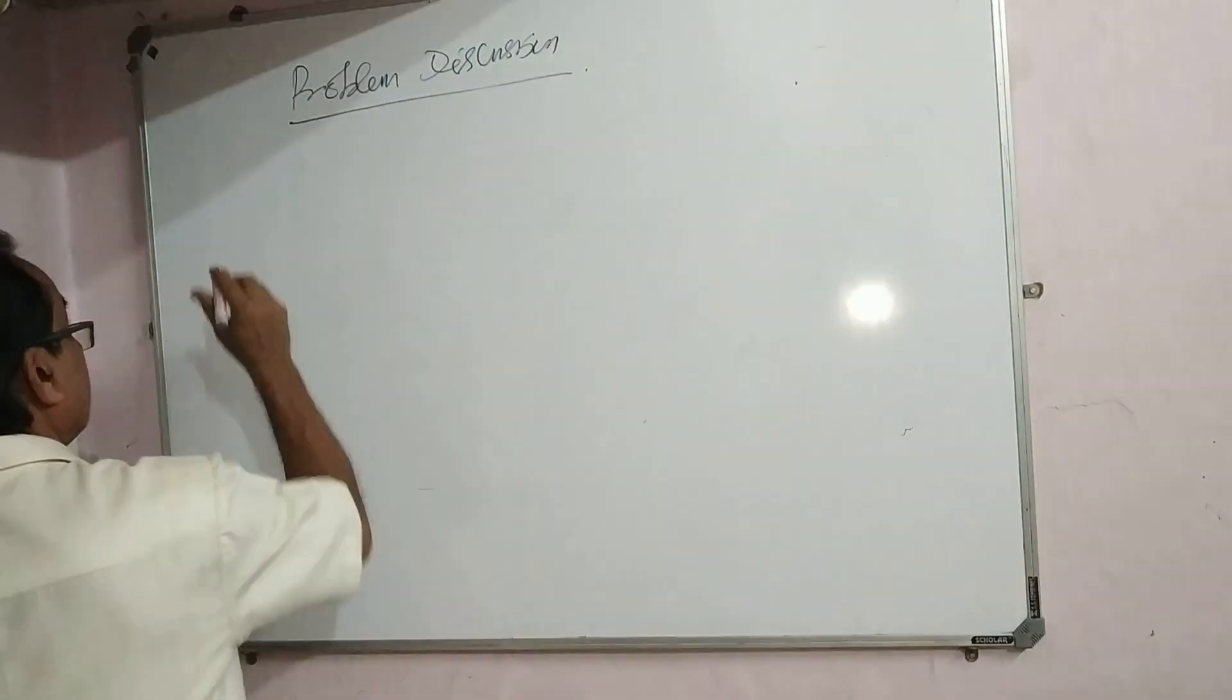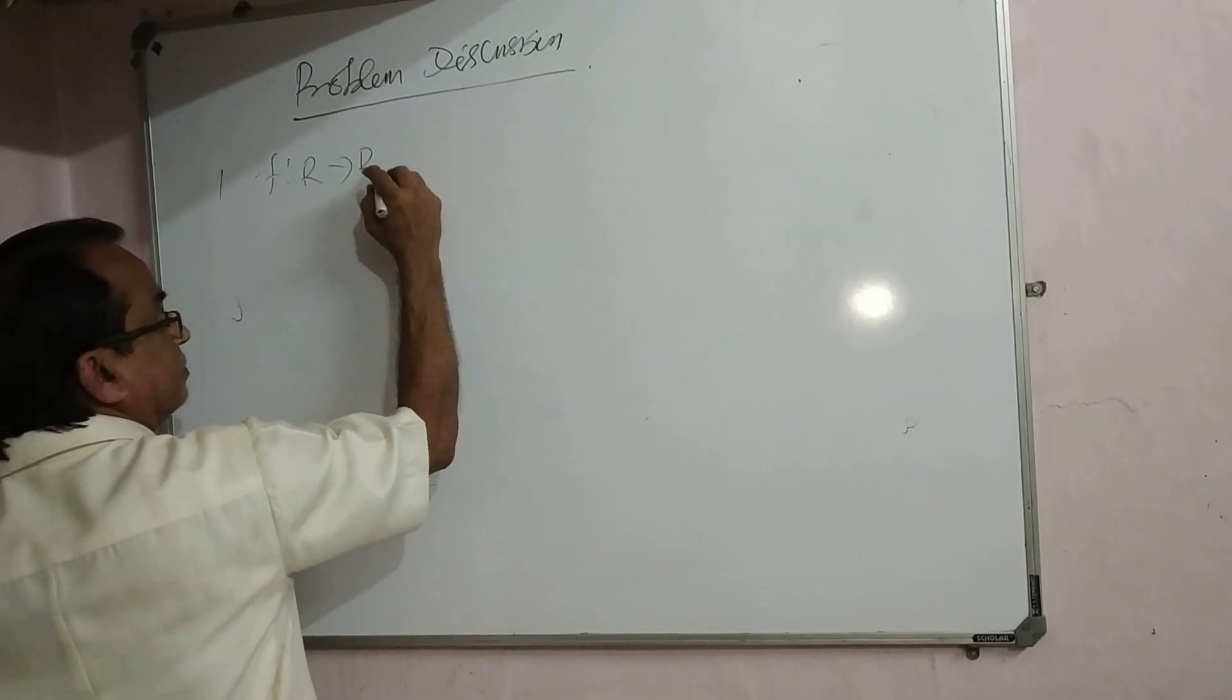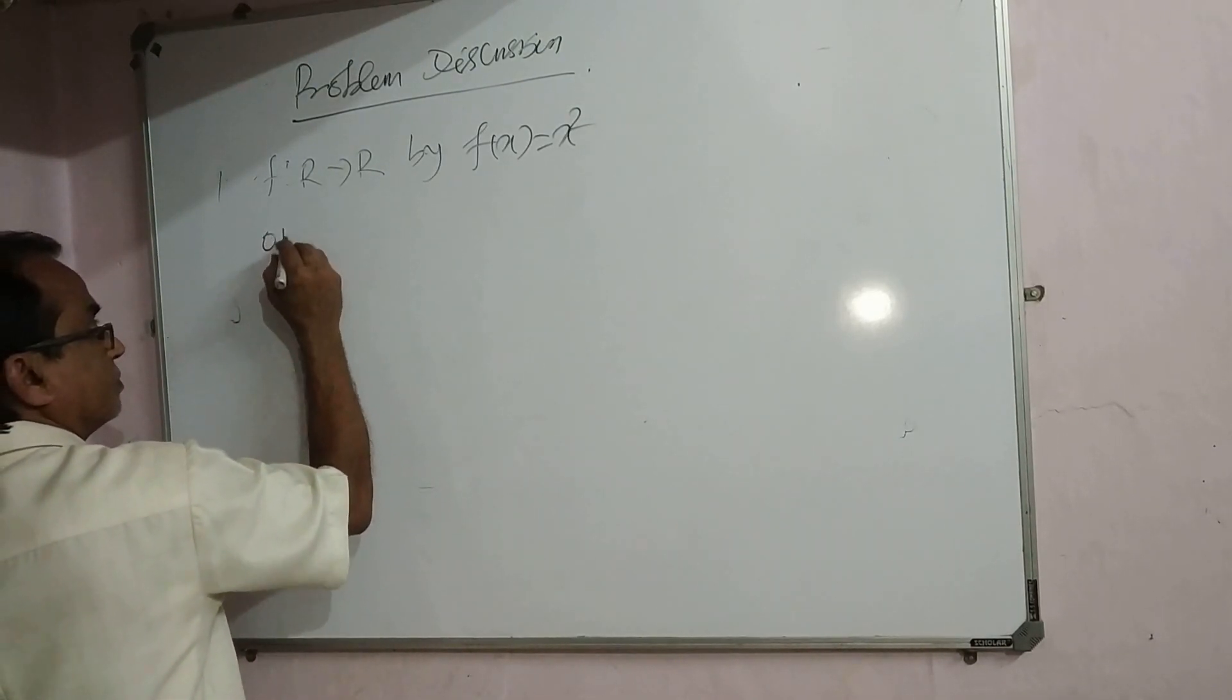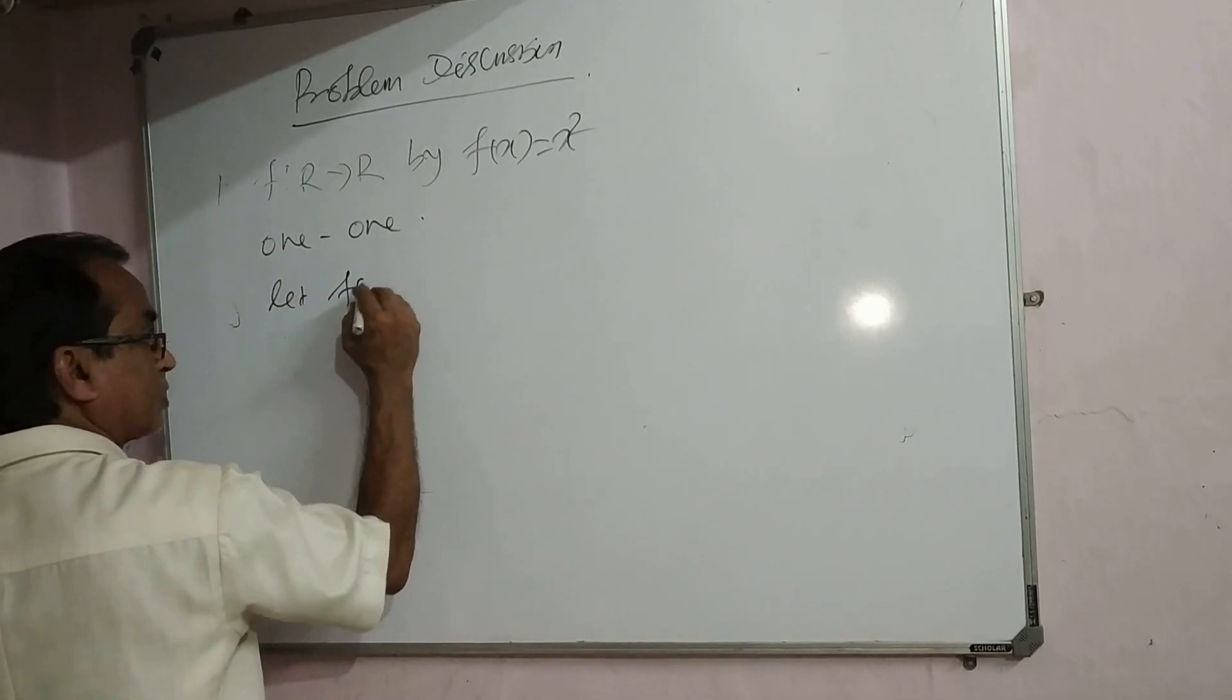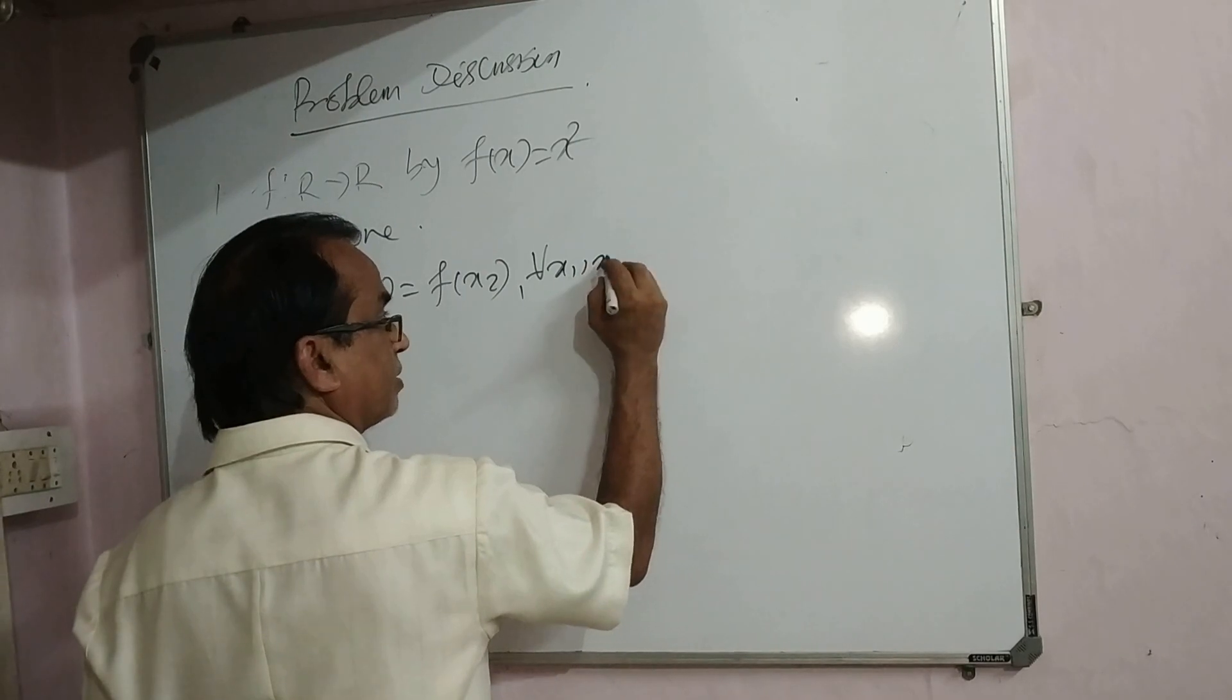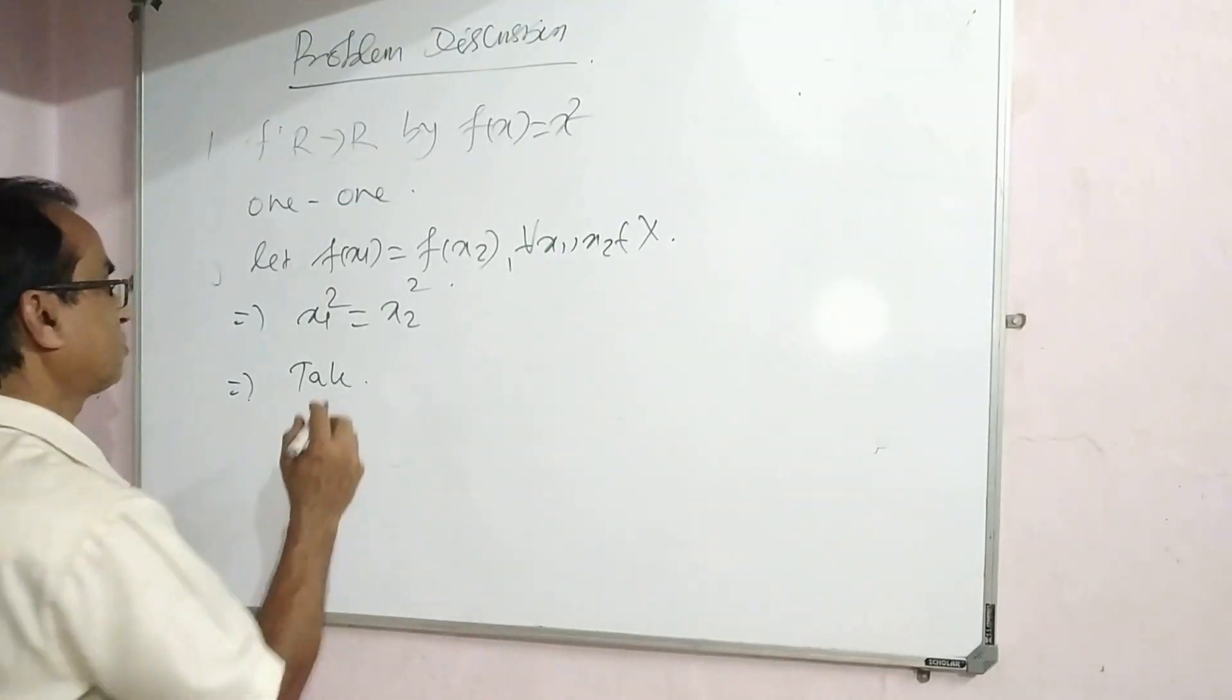Now coming to number one: f maps R to R by f(x) equals x squared. For one-one, generally by NCERT, let f(x1) equals f(x2), which implies x1 squared equals x2 squared, where for all x1, x2 belong to domain X.